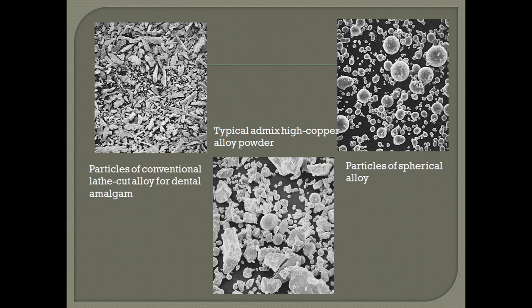Hence there will be more porosity after the cement is set. Whereas in spherical alloys, they have more surface area due to the spherical nature of the particles, so less mercury is required — generally about 42%, whereas the mercury required for the lathe cut alloys is about 50%. Lathe cut alloys can be condensed and contoured as per the proximal contact areas, whereas the spherical alloys are difficult to condense and contour because they tend to stick to the instrument used to condense them.